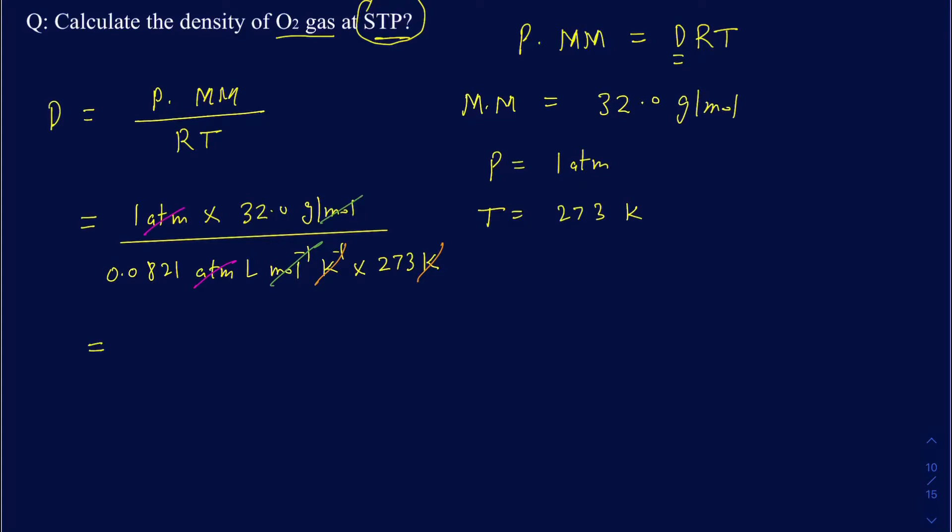So what's left behind is your grams and your liters. So it's going to be grams over liters, and that's the units for density because it's mass over volume. When you do this math, you got 32 divided by 0.0821 times 273.